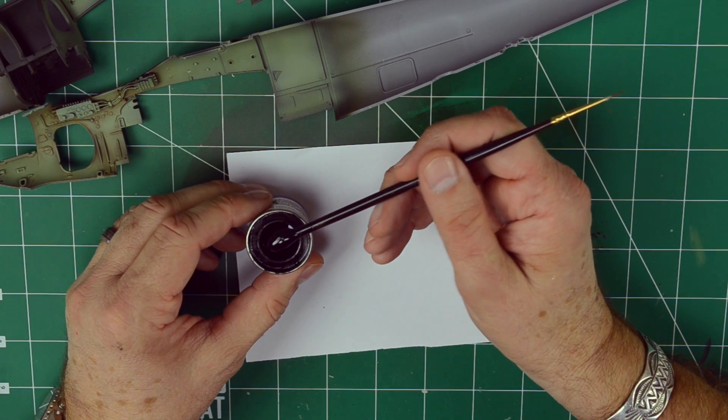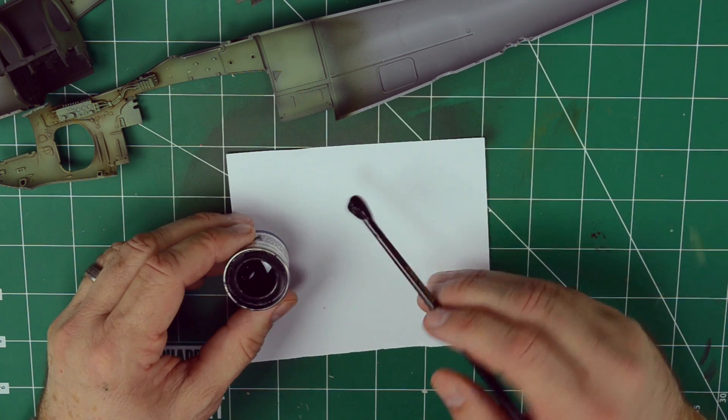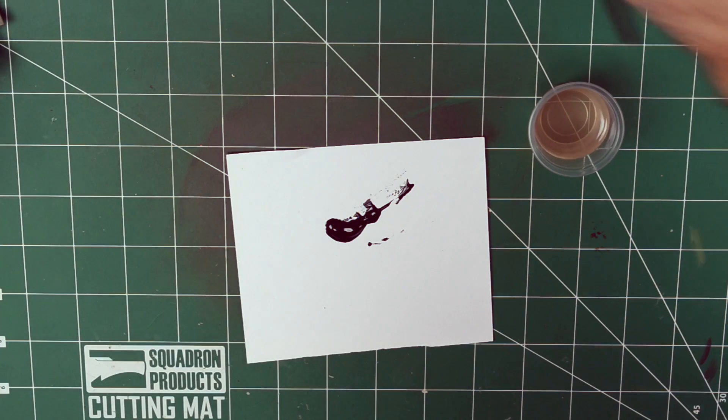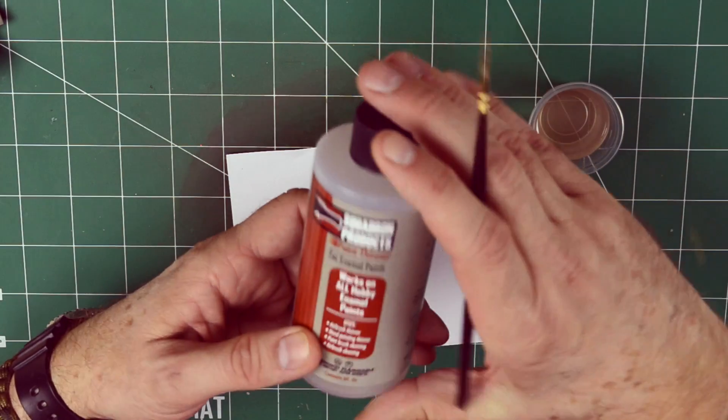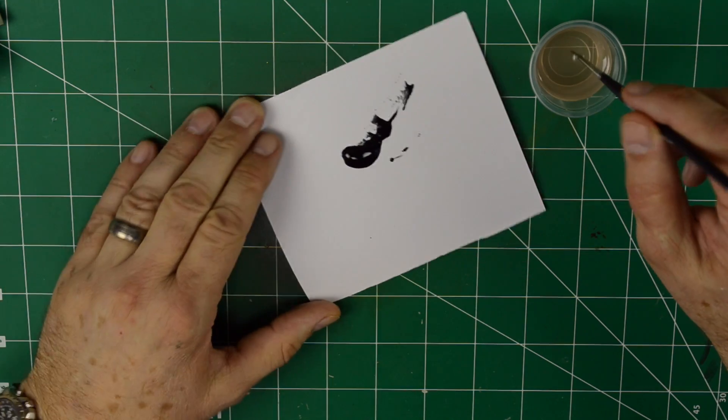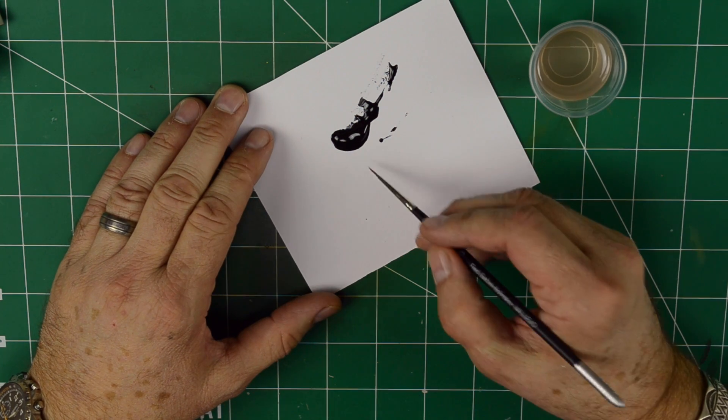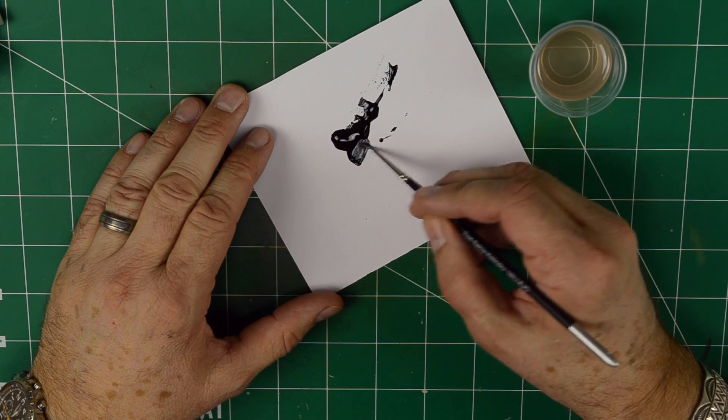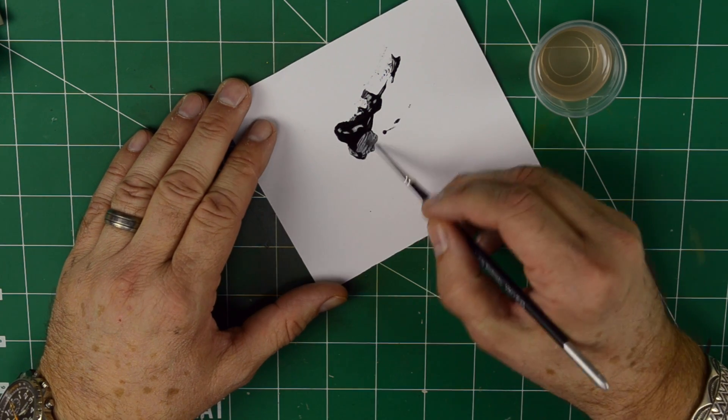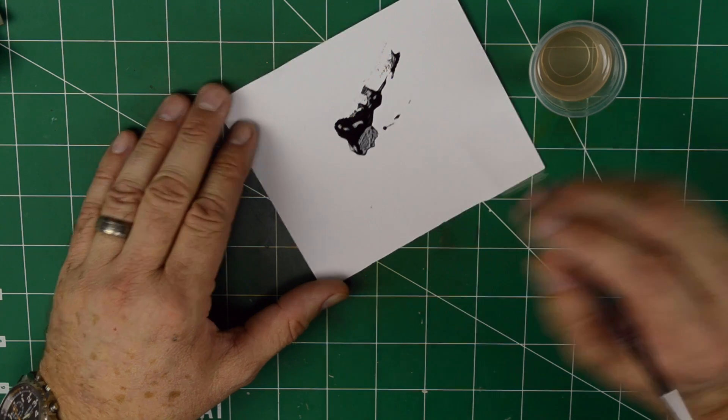I'm going to scoop some of the thick out of the can and just place it on here. I'm going to have some thinner, the Squadron enamel thinner. The reason I put it on paper, I don't like to dip my brush in the can. By scooping the thick from the bottom of the can, it will give me a flat finish.